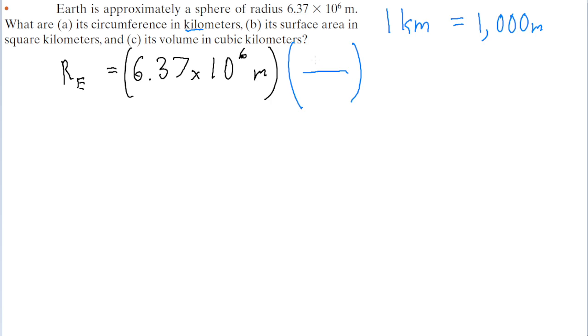That means that we want to put one kilometer in the top of the conversion ratio and a thousand meters in the bottom. Because if we do it this way, then we can see that the meters will cancel out, because we've got one meter in an effective numerator and another meter unit in the denominator, so those would disappear, and we're only left with what's on top, the kilometer.